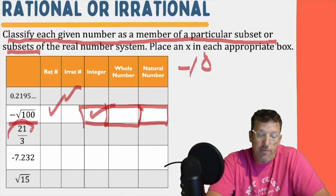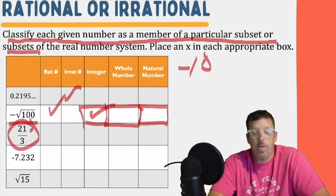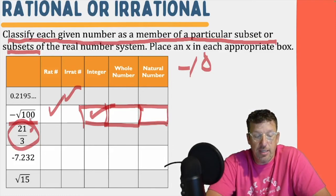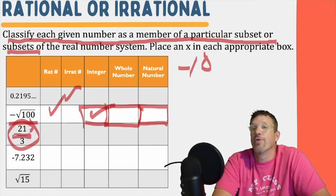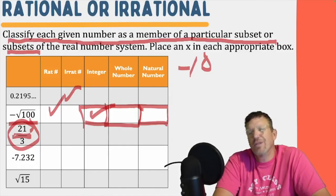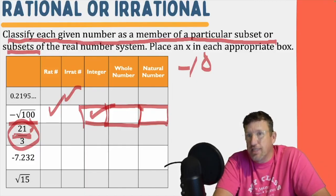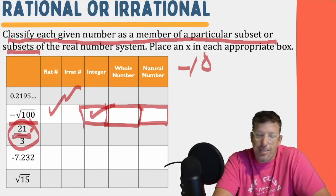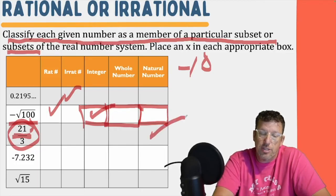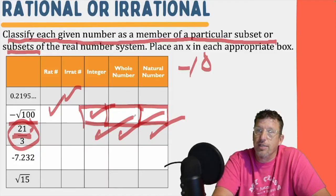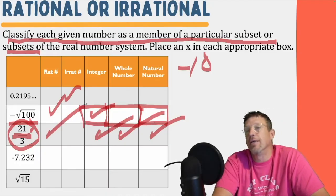Here we have a fraction: 21 thirds, which is 21 divided by three. What is 21 divided by three? Seven — you are correct. Is seven a natural number? For sure, it's a counting number. Is seven a whole number? Absolutely. Is seven an integer? Absolutely. Is seven a rational number? Absolutely.